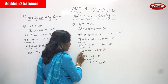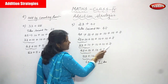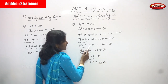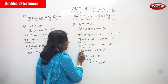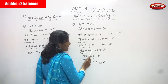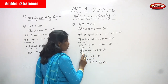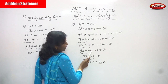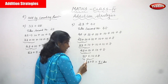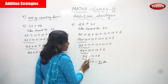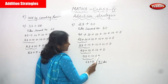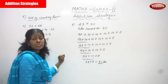23 plus the first 10 gives 33. 33 plus the second 10 gives 43. 43 plus the third 10 gives 53. 53 plus the fourth 10 gives 63. 63 plus 8 gives 71. So the answer is 71.